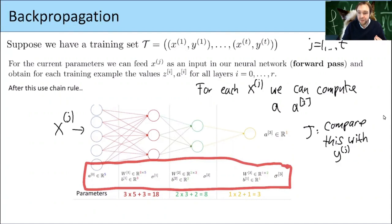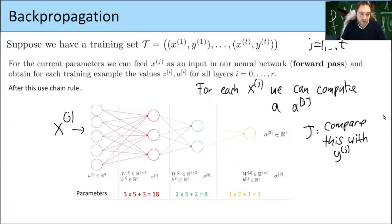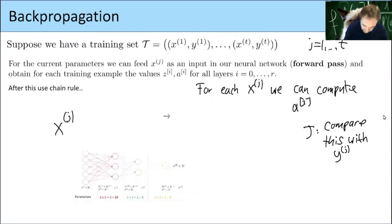I want to avoid confusion about transposes and matrix sizes for now, and just show the main idea of the algorithm using the chain rule. Let me recall it briefly: if h(x) = f(g(x)), then h'(x) = f'(g(x)) · g'(x). In Leibniz notation, dh/dx = (df/dg) · (dg/dx). If there is another function inside, we just add more terms.